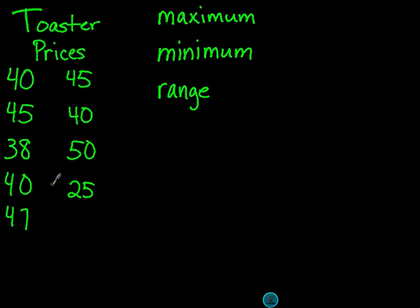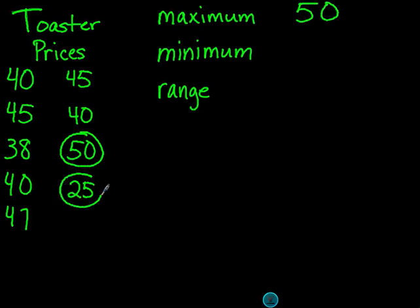The biggest number in this set of numbers is 50, so that's going to be our maximum number. For our minimum number, it's the opposite — it's the smallest number that we see in this set of numbers, so 25 is going to be the minimum number.